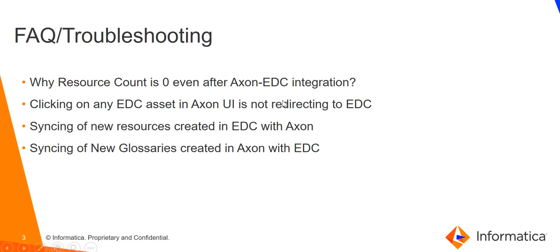The first FAQ: even after doing the Axon EDC integration, why is the resource count still showing zero? For troubleshooting, first make sure your EDC instance is up and running. If it is, then make sure the EDC configuration details provided in the Axon admin panel — host name, port, username, password, resource name — are all correct. If that is also fine and you can ping your EDC server from your Axon server and vice versa, but you still cannot see the resources in Axon, please contact Informatica GCS for further assistance.